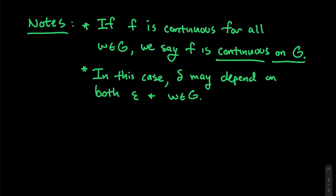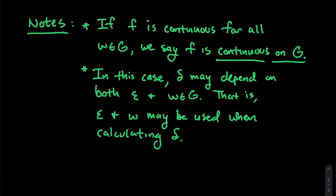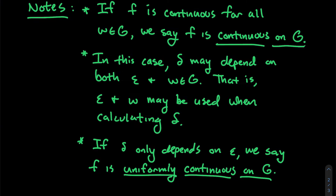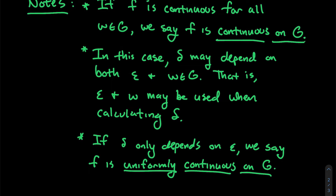For continuity on a set G, delta can depend on both epsilon and the point W you're considering. If delta only depends on epsilon — meaning the same delta works no matter what W you care about — then we say F is uniformly continuous on G. There might be another video about that in the future, but for now we're just considering what it means for a function to be continuous at a point or on a set.